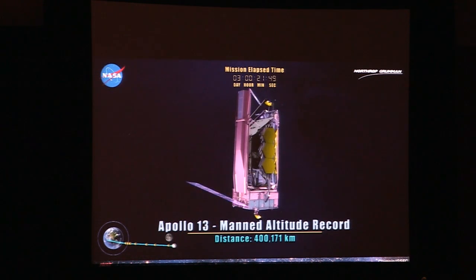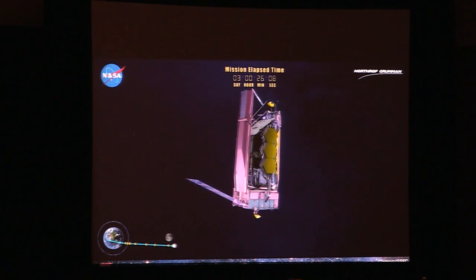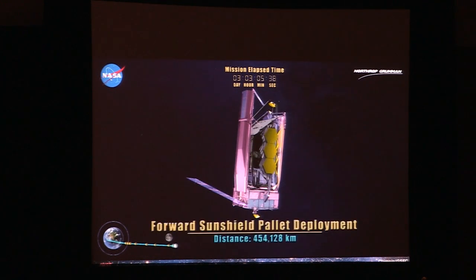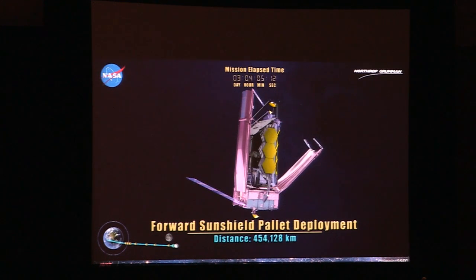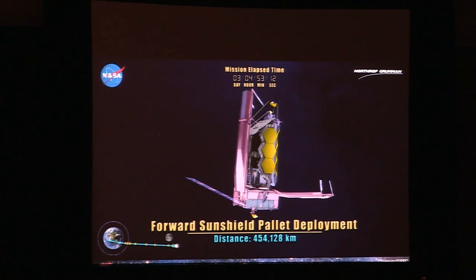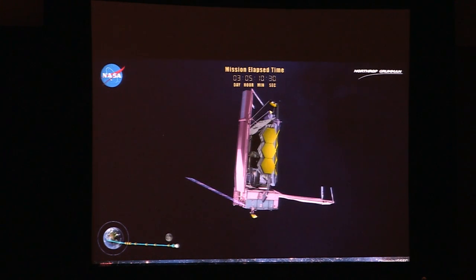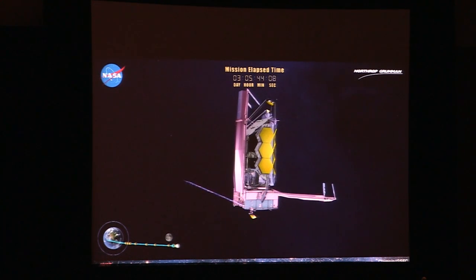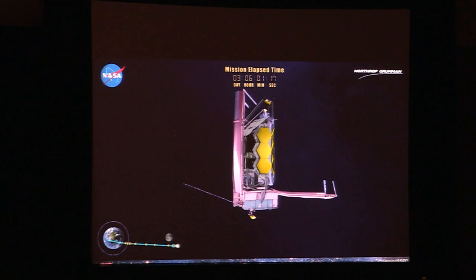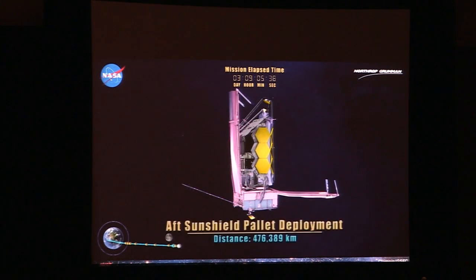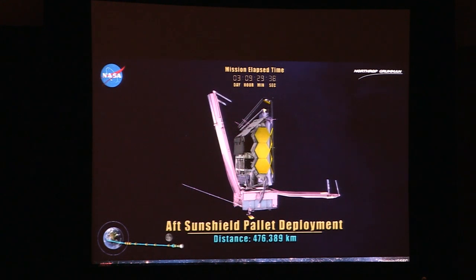We have an illustration showing where the manned spaceflight record is held by Apollo 13. We start doing the major deployments about three days after launch. The first thing we want to do is put out the sunshield, which is on two pallets. We put the fore pallet out first, then the pallet on the rear side is also released — all locked down by launch release mechanisms during launch. Here comes the second one.